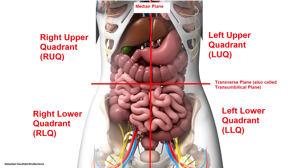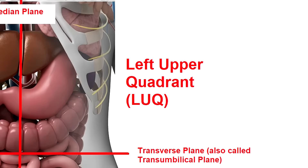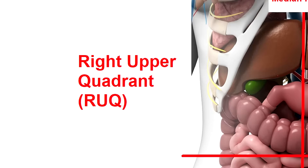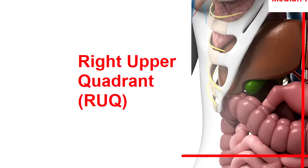First, let's take a look at the four quadrants, which are created by an intersecting horizontal plane, also called the transumbilical plane, and a median plane. The four quadrants are easy to remember because they consist of a left upper quadrant, left lower quadrant, right upper quadrant, and right lower quadrant.